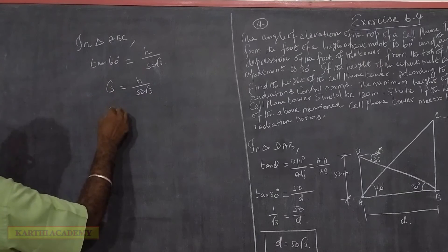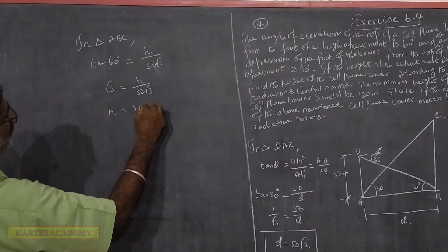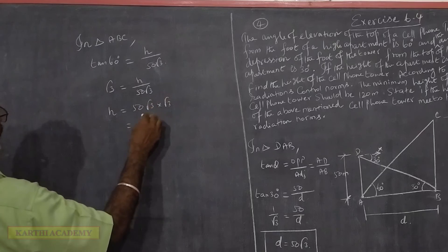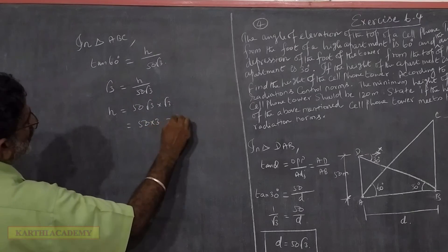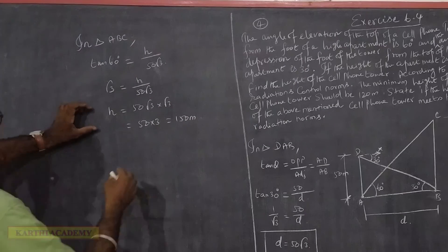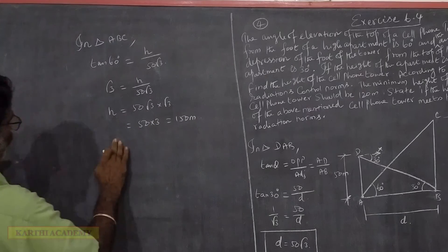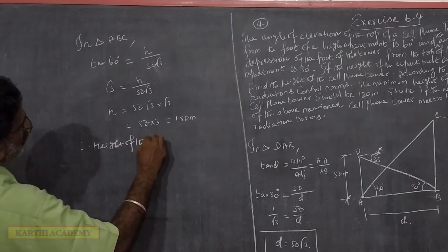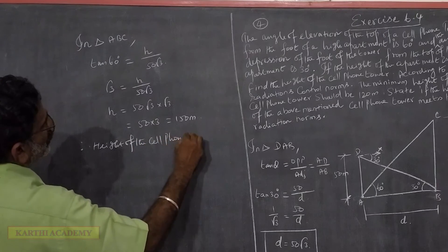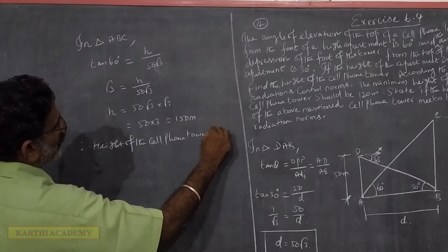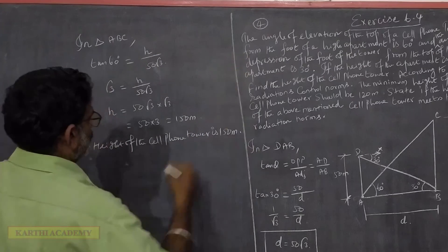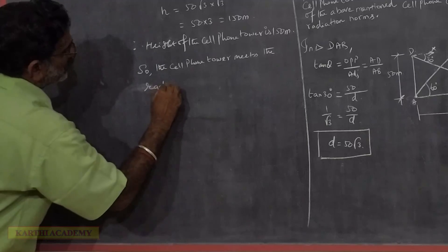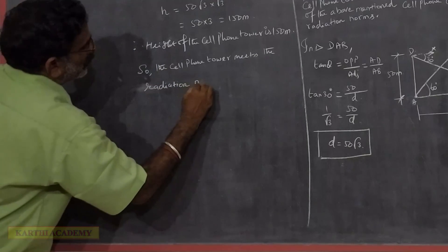H equals 50√3 into √3. The roots cancel out, and 50 into 3 equals 150 meters. Therefore, the height of the cell phone tower is 150 meters, which satisfies the radiation norms.